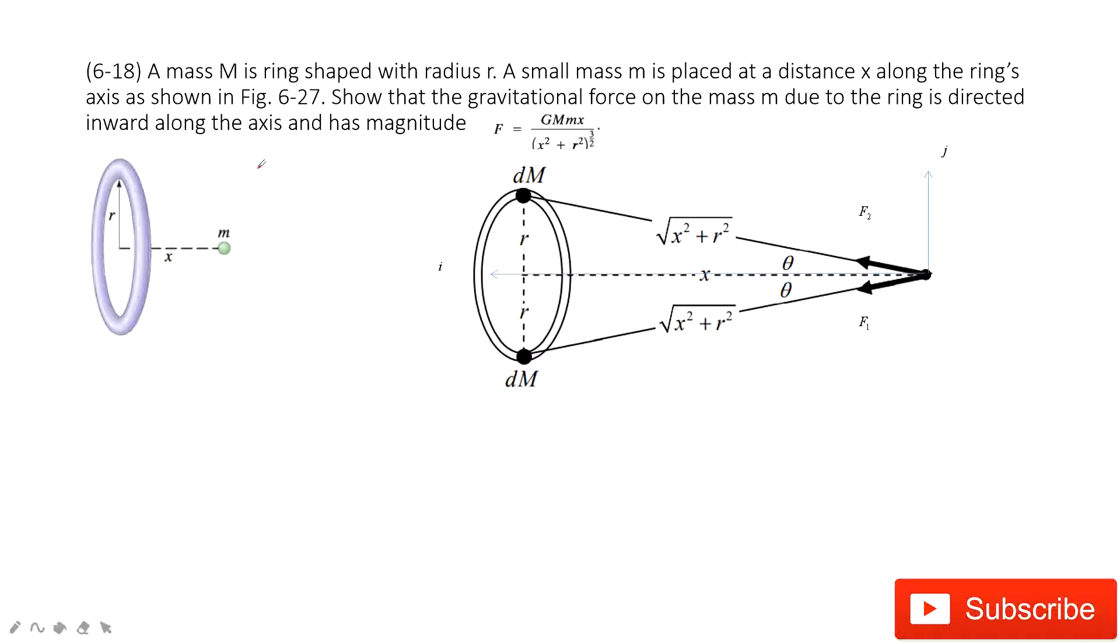In this one, you can see we have a mass M and it is a ring. And then it is located at the distance x to the left. We have another object, the mass is small m right there.